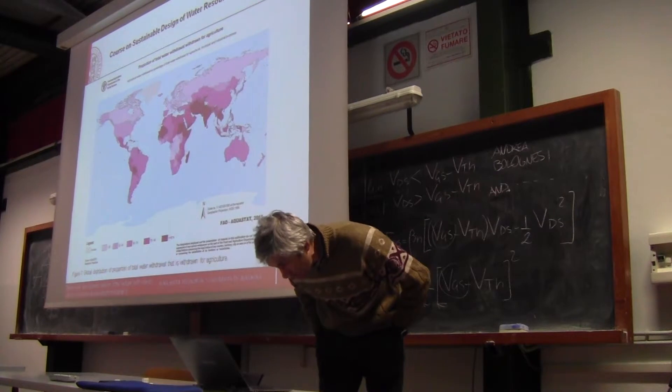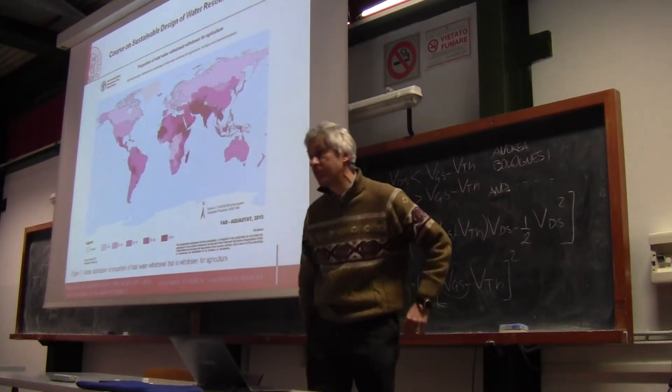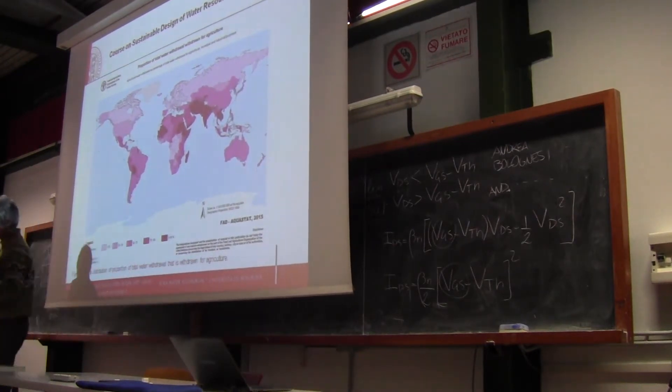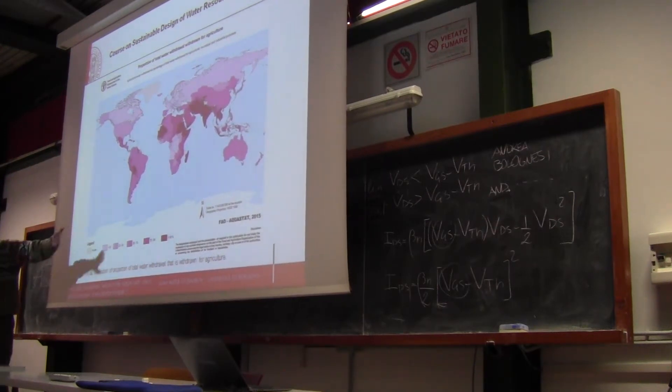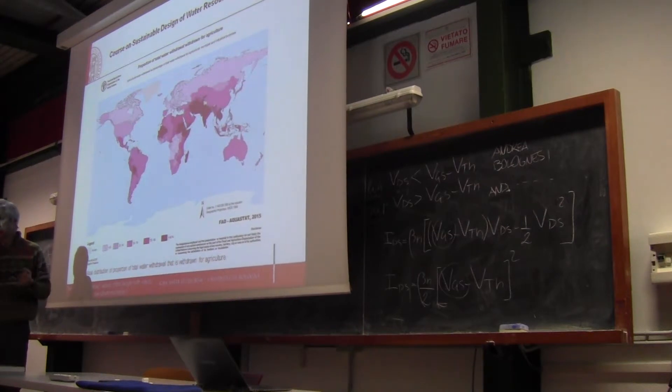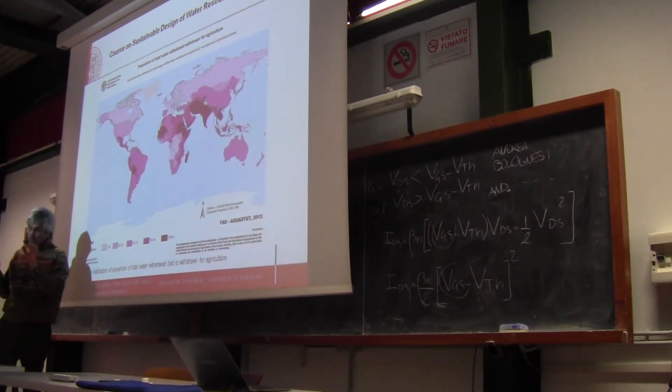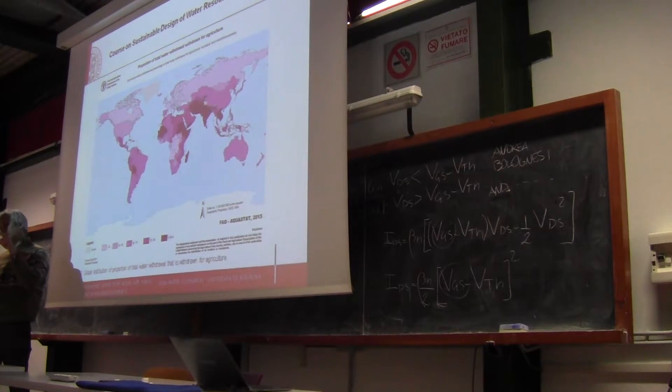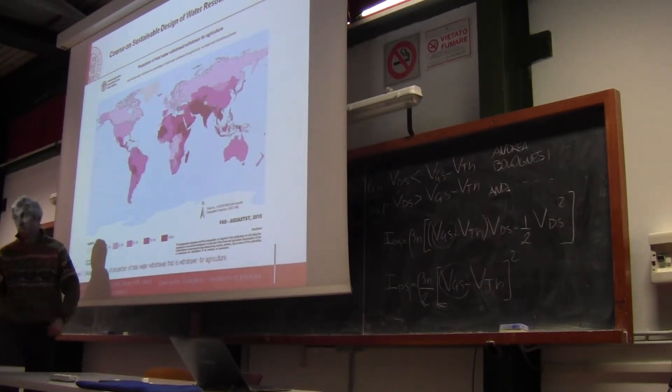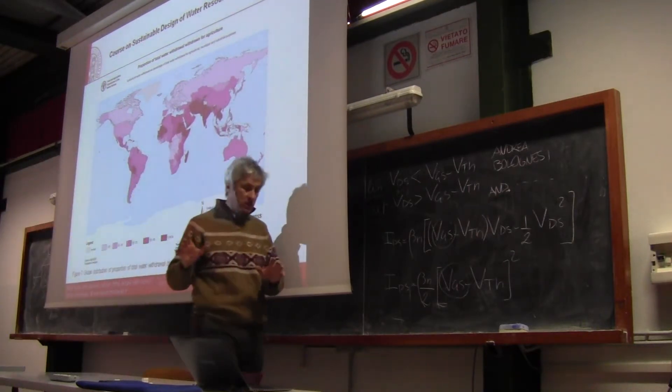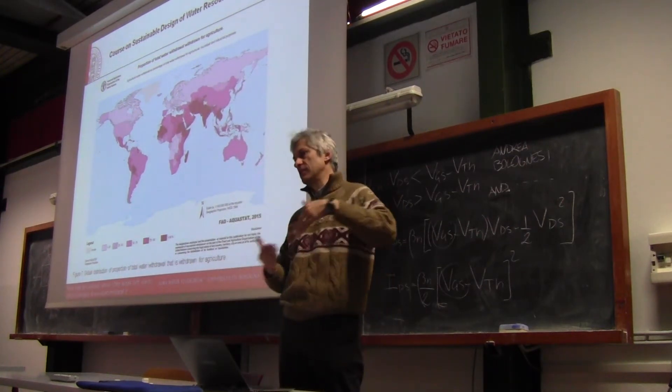And this is the global distribution of proportion of total water withdrawal for agriculture. And you can see here where water for food is mainly used. If you compare the pictures, you will see that where there is a lot of consumption for agriculture, there is also a high percentage of withdrawal. Because agriculture, as I said, and this is something that you have to keep into account, is 70% of water consumption globally. And also in Italy at the national scale. So if we take into account the total of water that we use, 70% is for agriculture.